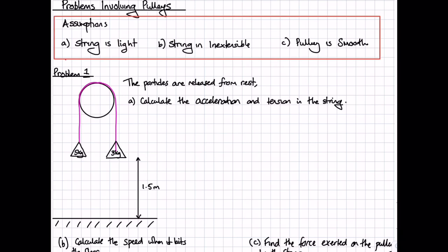Number one, we will need to assume that the string is going to be light. Number two, we will need to assume that the string is inextensible. And number three, we will need to assume that the pulley is going to be smooth. If we assume the string passing over the pulley is going to be light, then this means that tension in the string is going to remain the same.